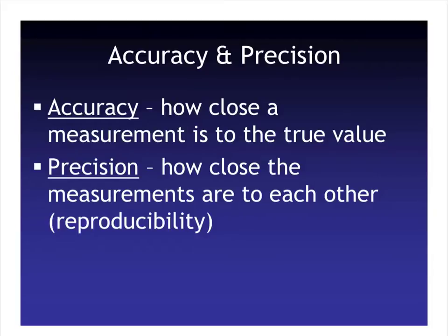Our next term is precision. Precision is how close the measurements are to each other — in other words, how reproducible they are. So if you keep measuring that block that we said is one gram, and you keep getting 0.5, 0.5, and 0.5, that means you're being precise. You aren't being accurate, but you are getting the same measurements. Both accuracy and precision are very important techniques we want to have.